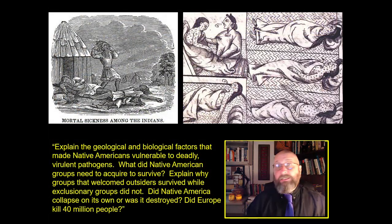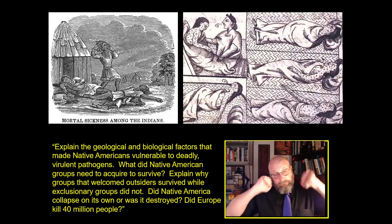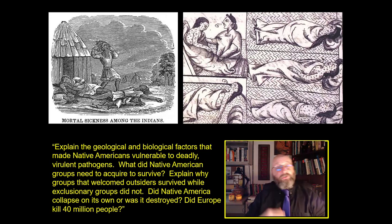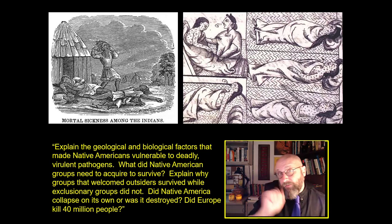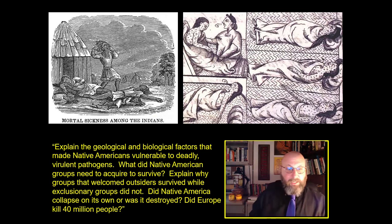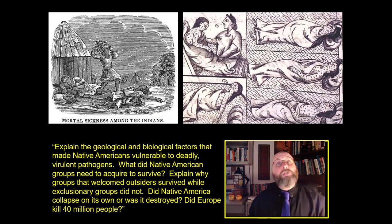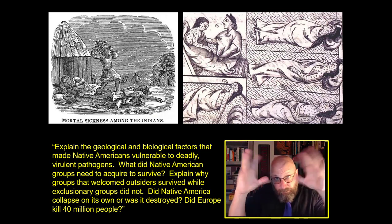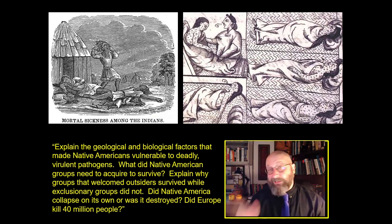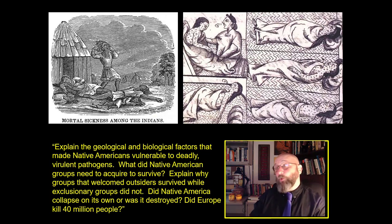We're doing this in service of a single question. Explain the geological and biological factors that made Native Americans vulnerable to deadly, virulent pathogens. What did Native American groups need to acquire to survive? Explain why groups that welcomed outsiders survived while exclusionary groups did not. Did Native America collapse on its own, or was it destroyed? And finally, did Europe kill 40 million people?